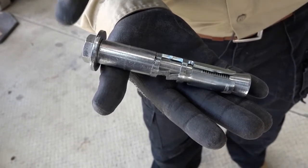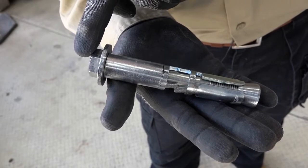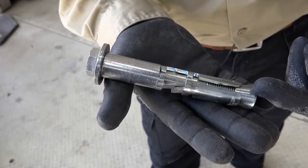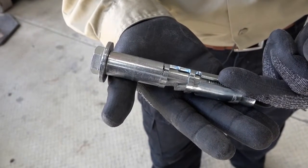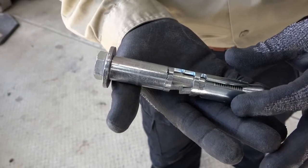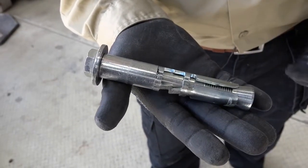As the name suggests, applying torque to the bolt head or nut will result in the cone being drawn up into the expansion sleeve, forcing it out to bear against the concrete of the drilled hole in which it is installed.